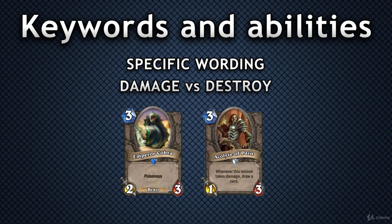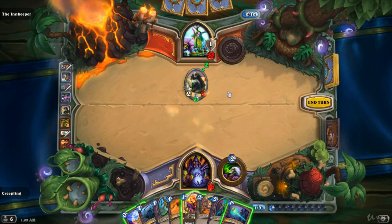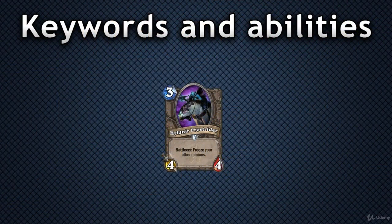It is worth noting that Poisonous minions will also destroy all targets they damage with their abilities. Bringing this back to our first example, let's attack the Acolyte of Pain with Emperor Cobra. The Acolyte will take two damage initially and draw a card, and then the Poisonous ability will destroy it — but no more cards will be drawn, since destroying the minion does not count as damage dealt.